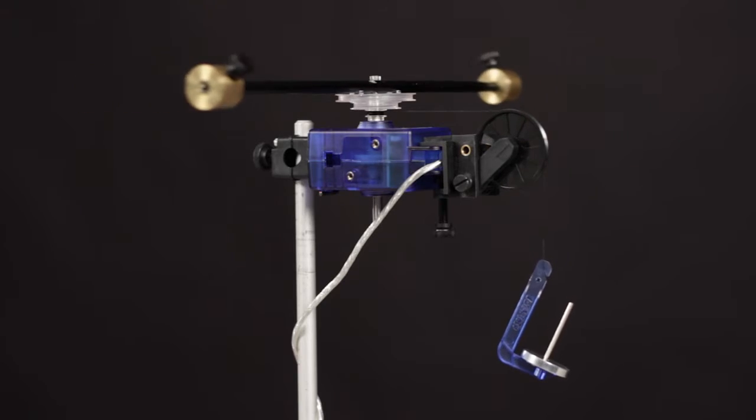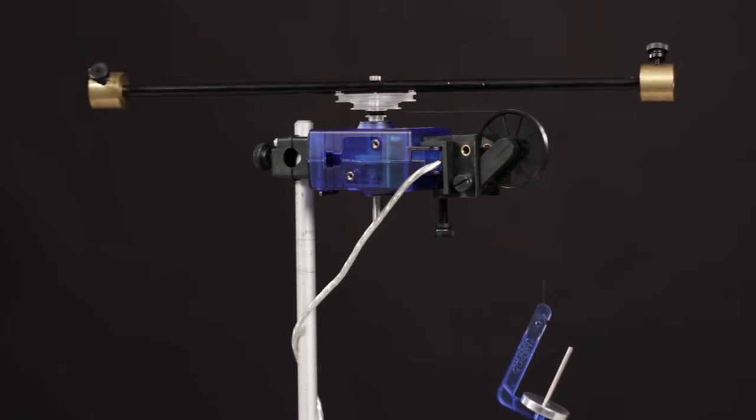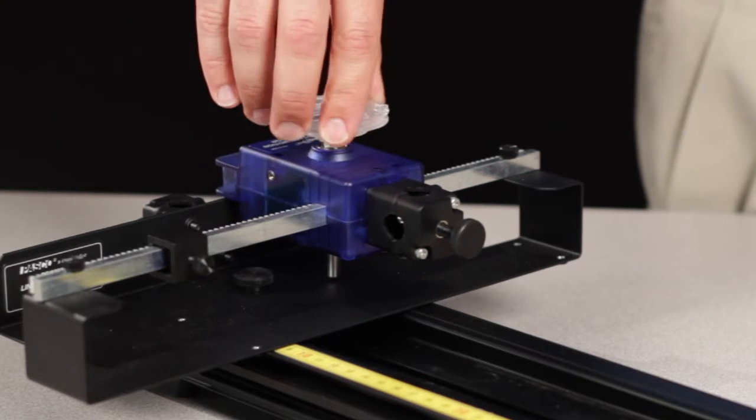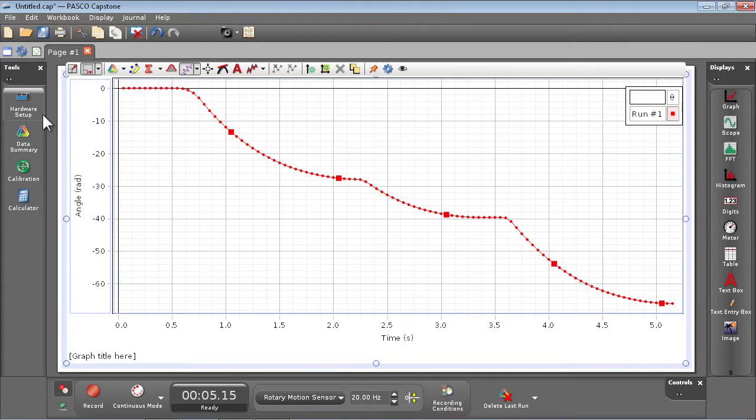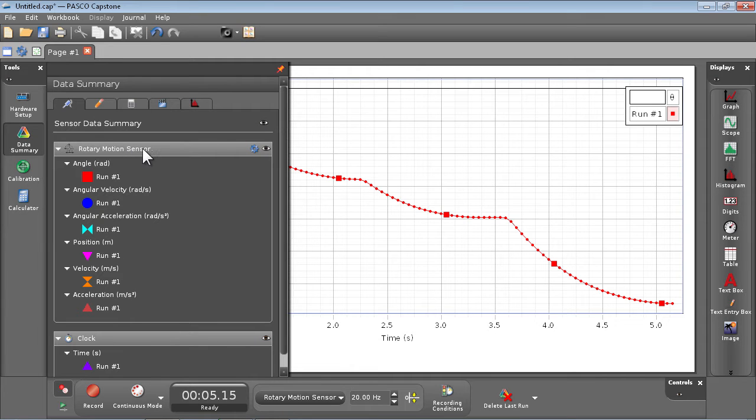It's important to note that the sensor needs no software configuration when making angular measurements. However, when making linear measurements using the three-step pulley on the rotary motion sensor, your software must be configured to match the groove on the pulley that you're using.